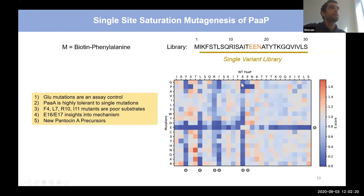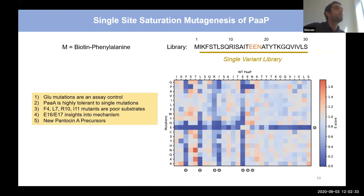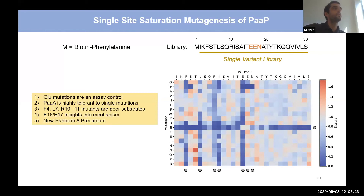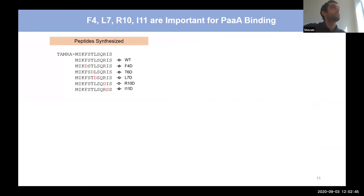We also noticed, somewhat fortuitously, differential processing between the two core glutamic acid mutations E16 and E17. This gives insight into the reaction mechanism, which I'll describe shortly. Additionally, the only other residue in the core, the N position, also looks very tolerant to mutations, suggesting we might be able to make new pantocin A analogs.